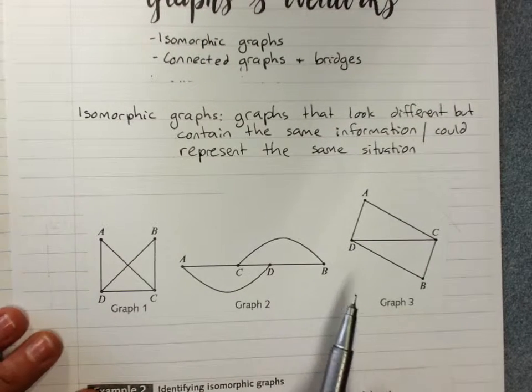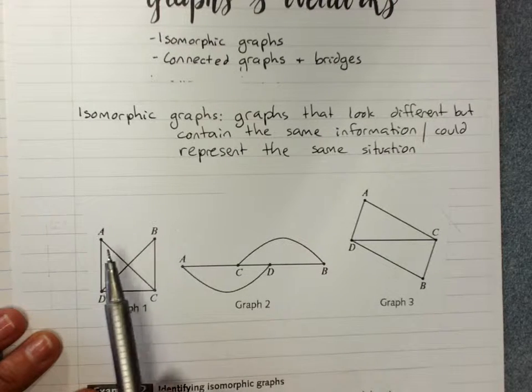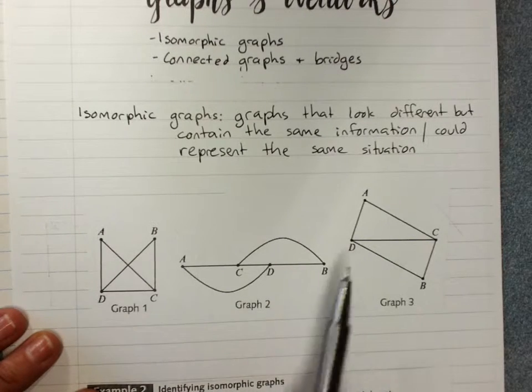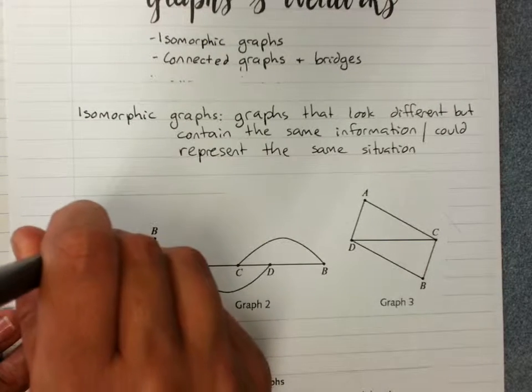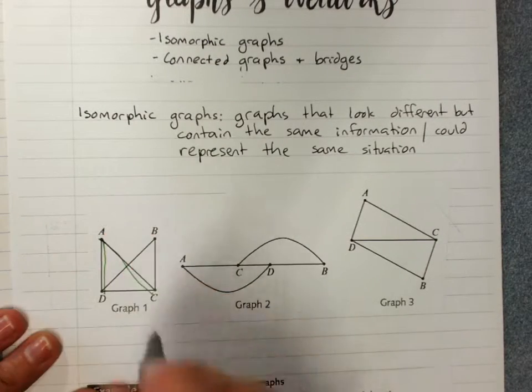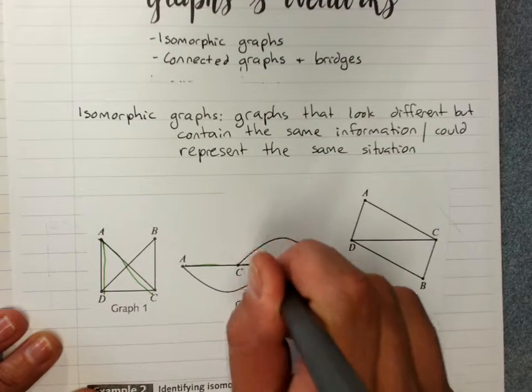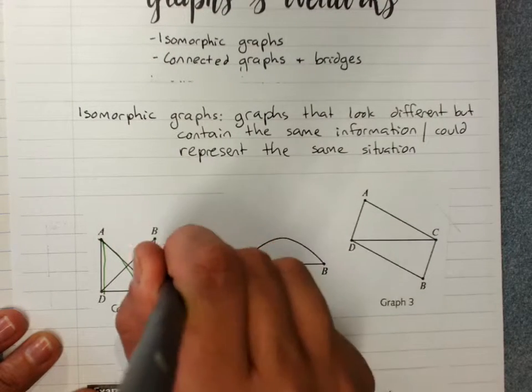If I asked you to draw a situation representing this connection between A, B, C, and D, any one of these would pass. Because look at why. A is connected to D and C. A is connected to D and C.